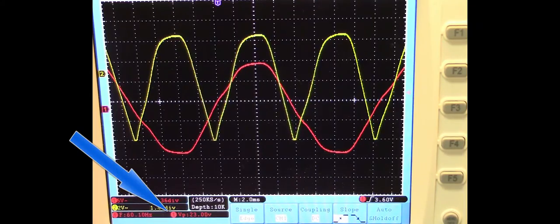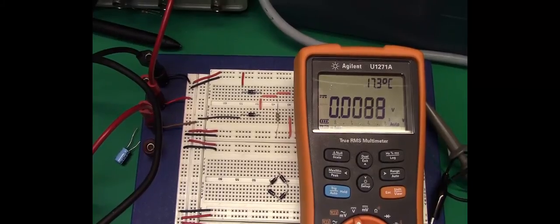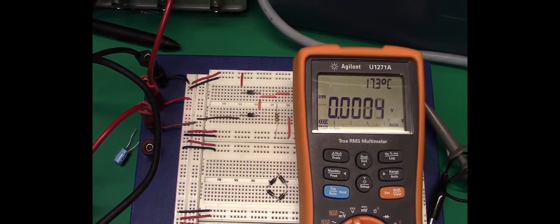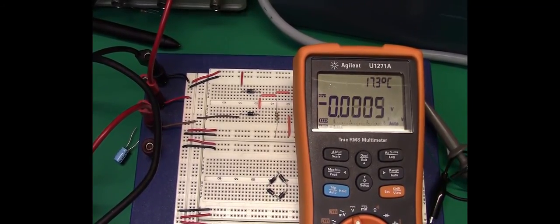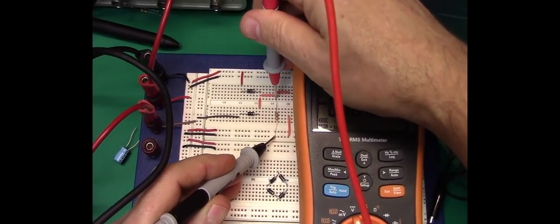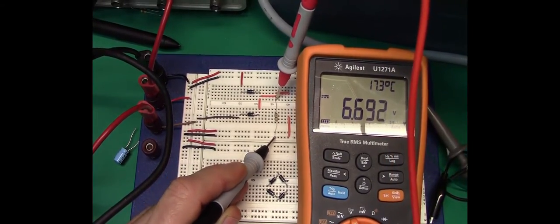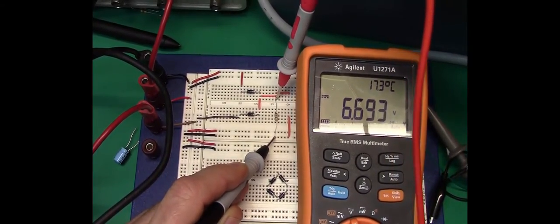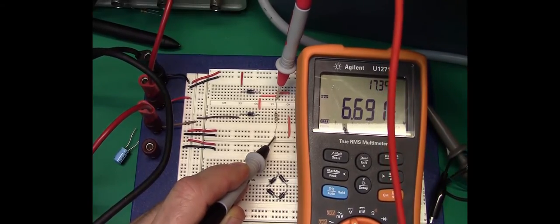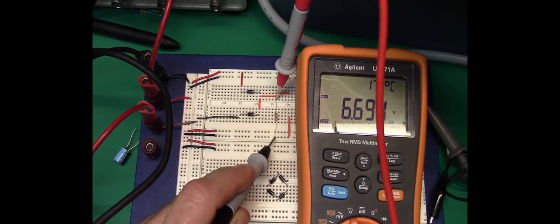Let's take some DC measurements and see how accurate our calculations were. Our estimate for our DC output was 6.98 volts for the unfiltered circuit. When we measure across our resistor we come up with 6.69, so about 6.7. Again that's well within our 10 percent tolerance and it looks like we have a good circuit. Now let's go ahead and add the filter and see what the ripple looks like on the scope as well as the DC voltage.